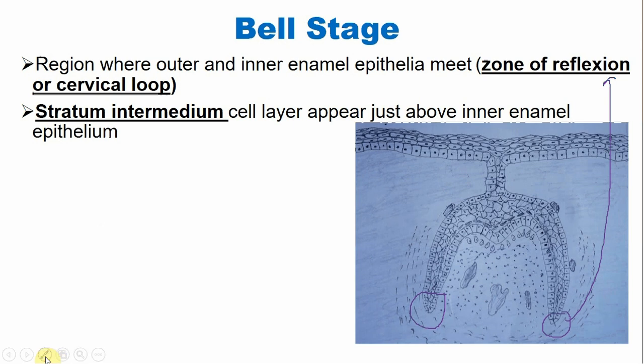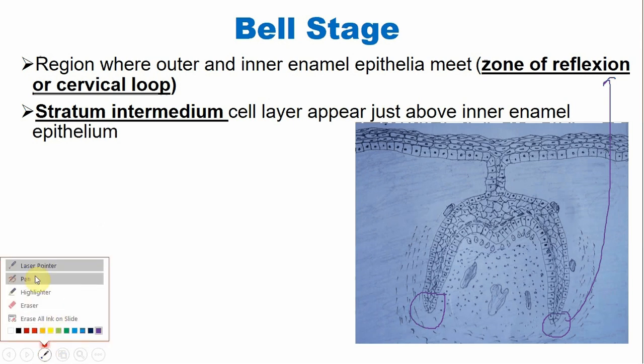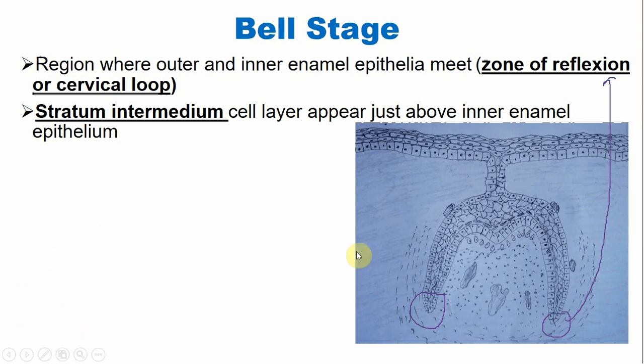A new cell layer appears just adjacent to the inner enamel epithelium, and this cell type is known as the stratum intermedium. The stratum intermedium basically helps in the formation of enamel, perhaps through the release of some organic substances like proteins, together with these cells.